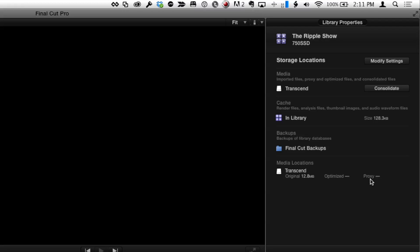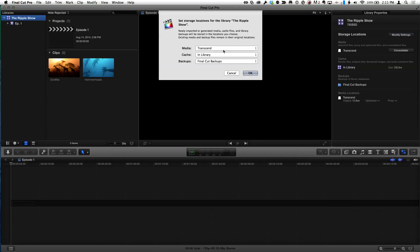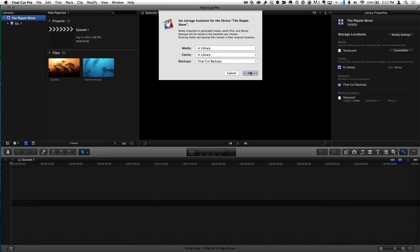Now before I create the proxy media, this is the key that you need to understand about Final Cut: how flexible it is. You can create transcoded media, proxy or optimized, when you import or after. I'm going to go back to modify settings for the library and I'm going to change the media location to in the library, which is on this drive. I could also target another location on this drive or maybe a little portable drive that I want to put the proxies on. I can choose wherever I want to put those proxies separate from the original media.